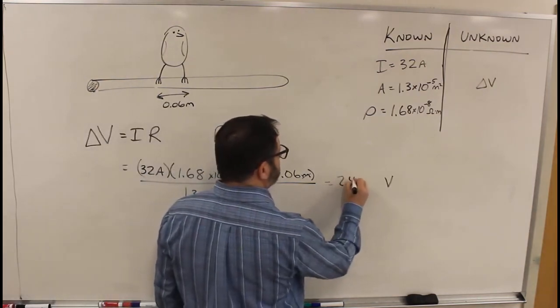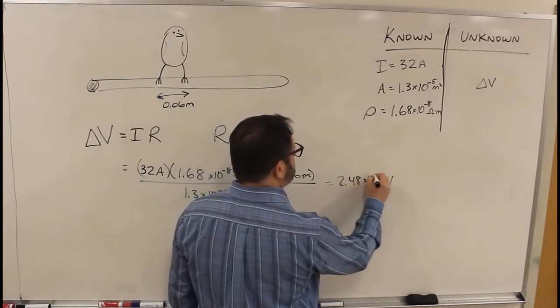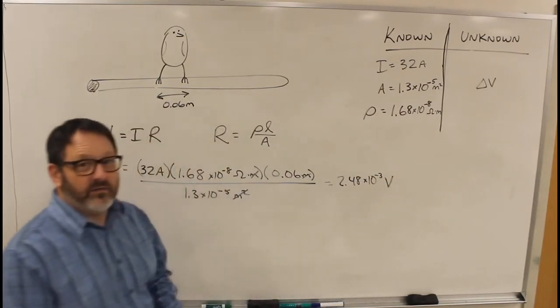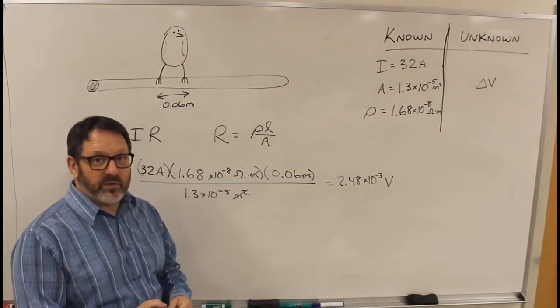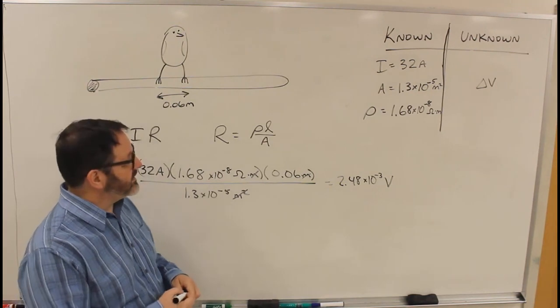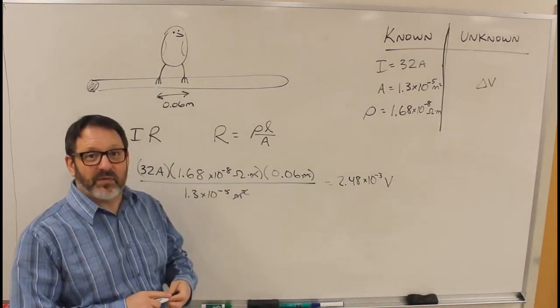You get 2.48 times 10 to the minus 3 volts. So it's actually a very small voltage between the bird's feet. That's why they can sit on the wire without being injured.